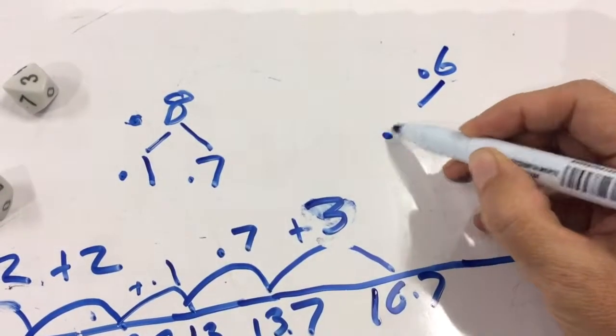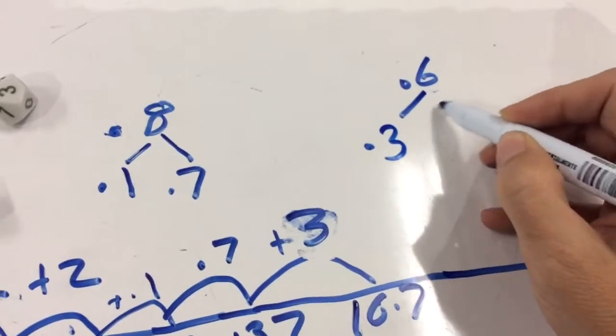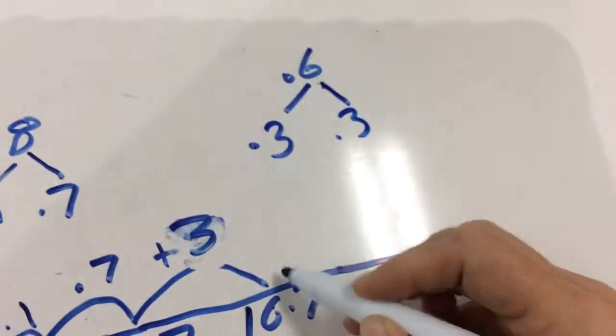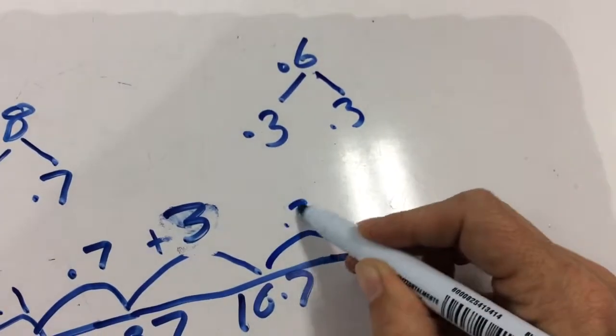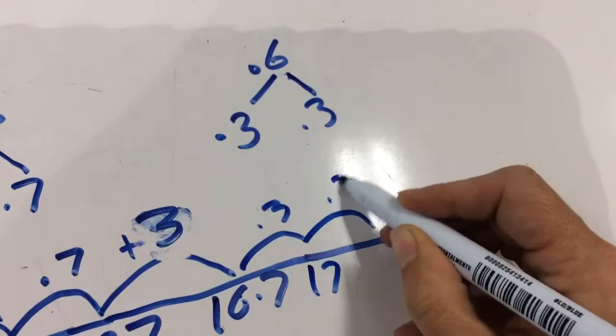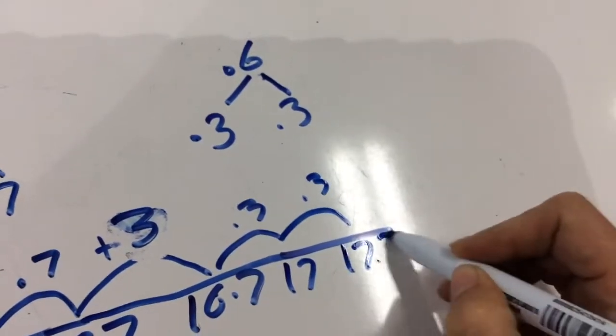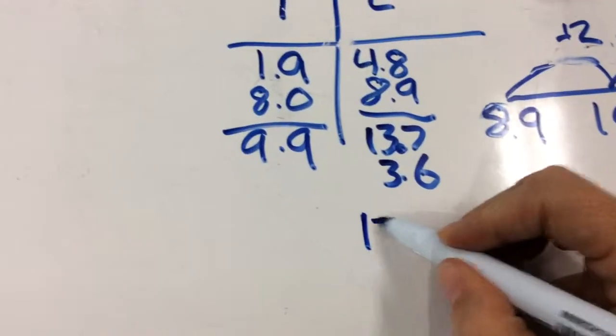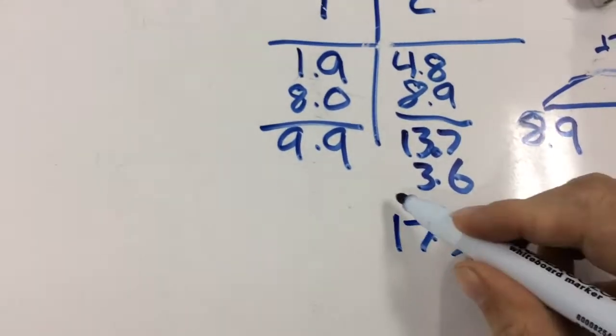So I can do 0.3 and then 0.3. So if I do plus 0.3, it gets me to 17. And plus another 0.3, it gets me to 17.3. So that was a terrible set of 3.